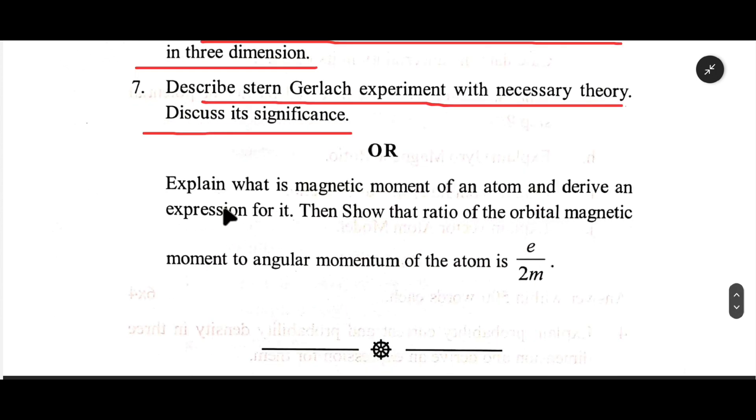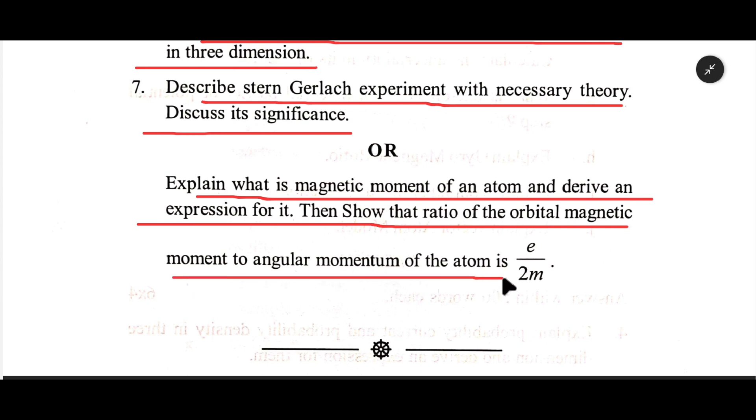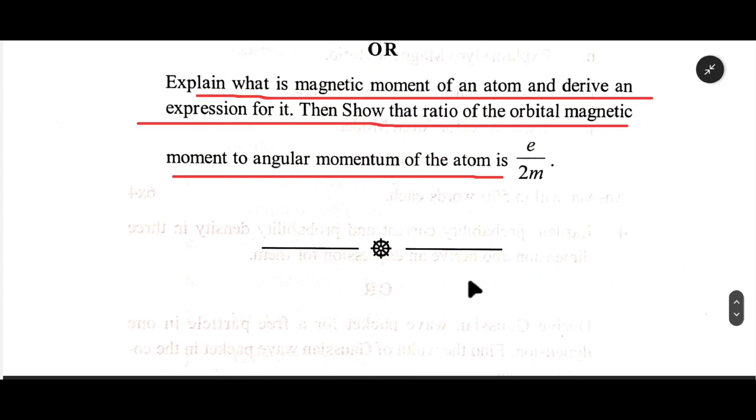Discuss its significance. OR Explain what is magnetic moment of an atom and derive an expression for it. Then show that ratio of the orbital magnetic moment to angular momentum of the atom is e divided by 2m.